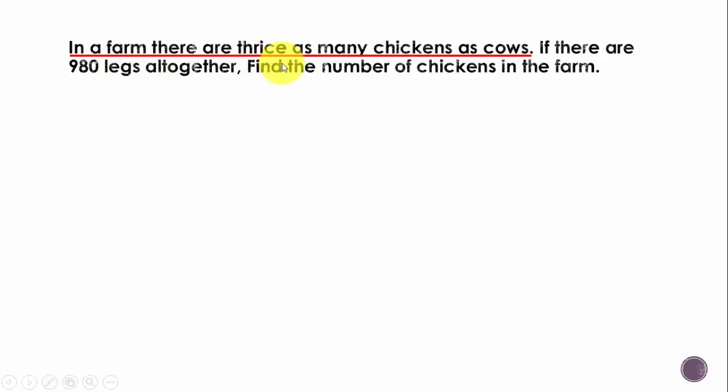In a farm there are thrice as many chickens as cows. Since cows come after 'as many', cows will be our reference. We'll say cows one block or one unit, and chickens there are thrice as many, so three times. For chickens we'll have three such blocks or units.